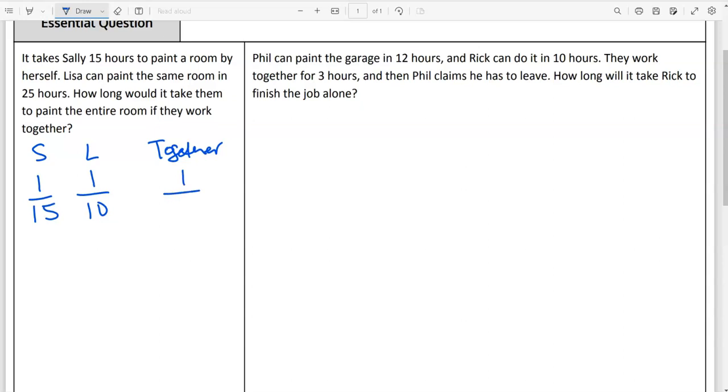Together, we don't know. We don't know how long it's going to take. So that is the setup of it, of the fraction part. Working together typically means adding, right, when we say together. So when they're together, it should equal this guy. Lisa does it in 25 hours. So in one hour, she does one-twenty-fifth of the room.